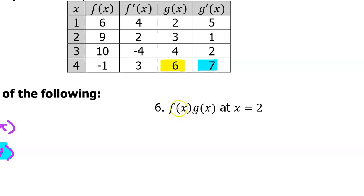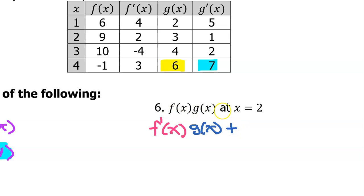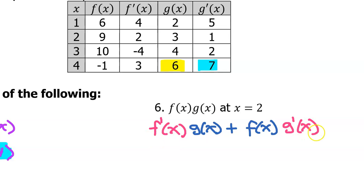For number 6, we need to find the derivative of this product, so let us use the product rule. I am going to take the derivative of the first function and leave the second function alone, and then put a plus and go through it again. The second time through, I am going to leave the first function alone and take the derivative of the second function.